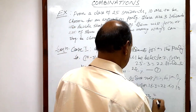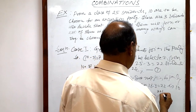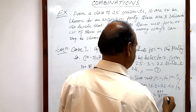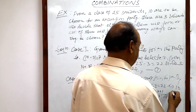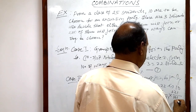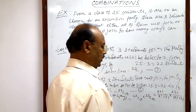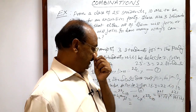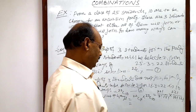We have 22C7 equals 22 factorial divided by 7 factorial into 15 factorial, and 22C10 equals 22 factorial divided by 10 factorial into 12 factorial. By solving this expression we will get the result.